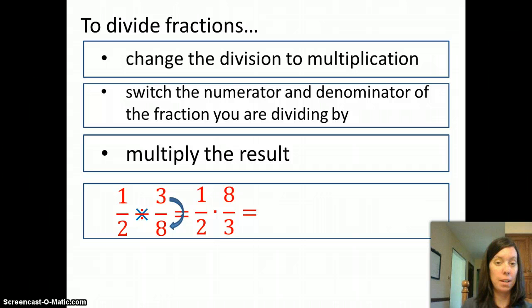So we multiply the numerators and we get 8. Multiply the denominators and we get 6. But don't forget the last step of multiplying is to write the answer in lowest terms. So we have to do that here as well. In lowest terms, that would be 4 over 3.